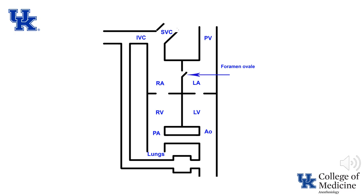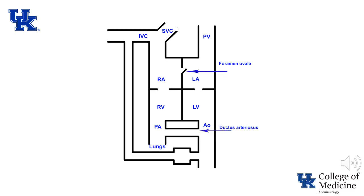Note the presence of the foramen ovale. This is essentially a one-way valve that permits blood to flow from the right atrium into the left atrium. Next, note the presence of the ductus arteriosus. This is a vessel that would permit flow in either direction. In utero, the pressure in the pulmonary artery is greater than the pressure in the aorta, so blood flows from the pulmonary artery into the aorta — that is, right to left.